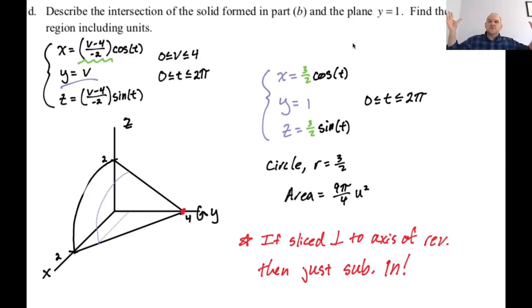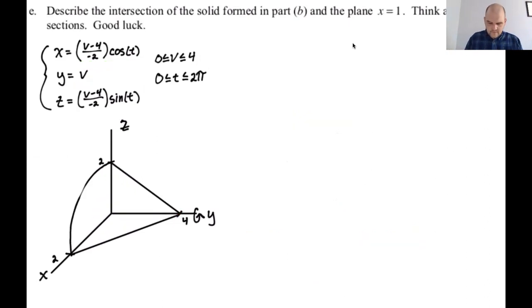So that's one of the big rules. If it's perpendicular to the axis of revolution, just sub into your parametrics for the surface and you can kind of see what's happening, which kind of probably means that if it's not, then something else is happening. Let's take a look at that.